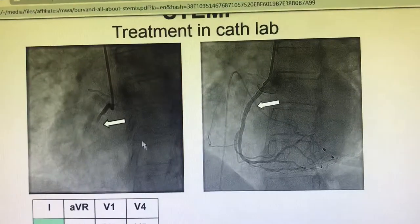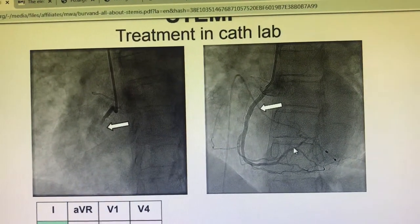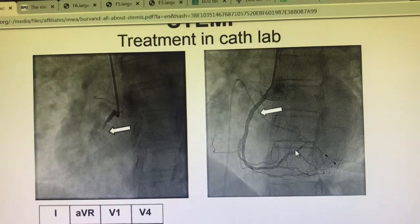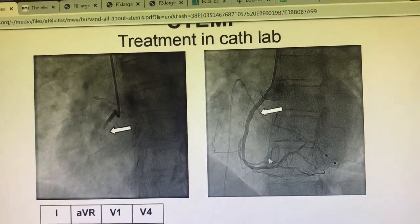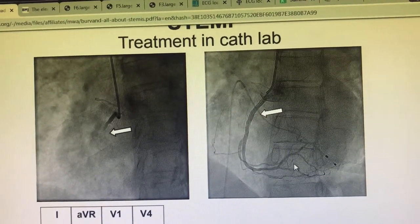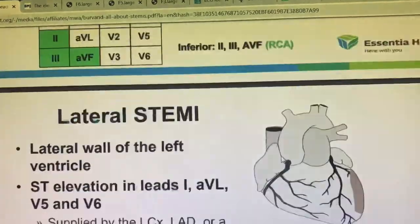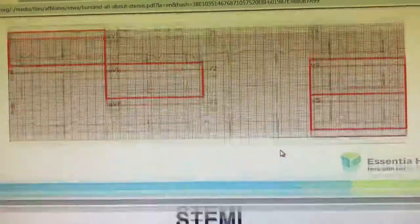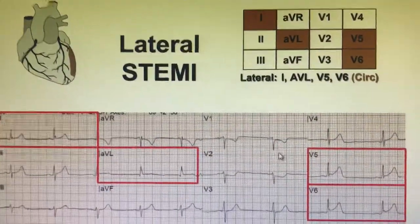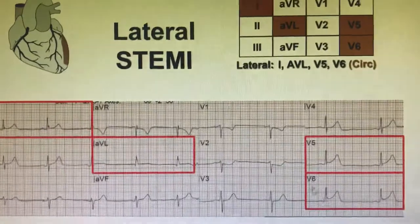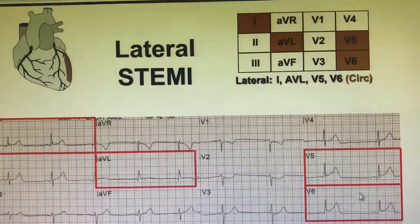Here is the same angio — the proximal RCA is affected. There is a hyper-dominant RCA, so it is affecting the posterior wall, inferior wall, and a slight portion of the lateral wall as well.